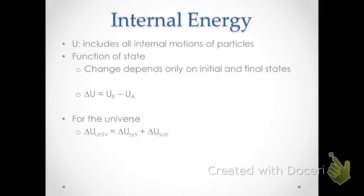We have this way of calculating delta U based on the initial and final states. It's also important to note that delta U for the universe equals delta U for the system plus delta U for the surroundings. Most of our computations are going to be for a system, but we will need in certain circumstances to note what the changes are in the surroundings as well.